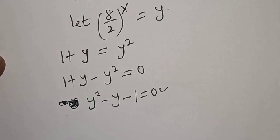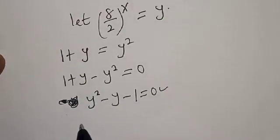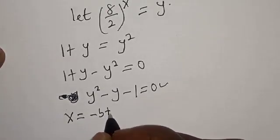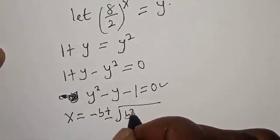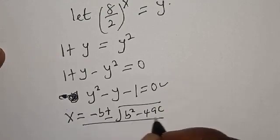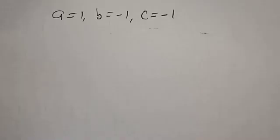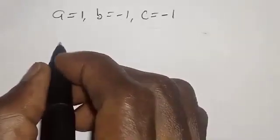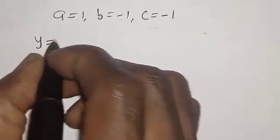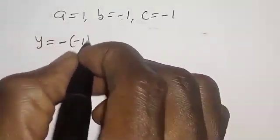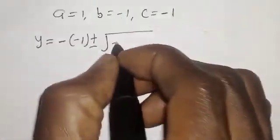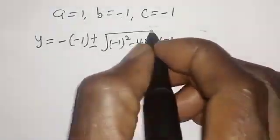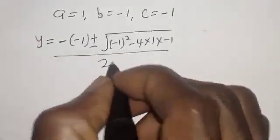This is a quadratic equation. We solve using the quadratic formula: y is equal to minus b plus or minus square root of b squared minus 4ac, over 2a. Here a equals 1, b equals minus 1, and c equals minus 1. So y equals minus of minus 1, plus or minus square root of minus 1 squared minus 4 times 1 times minus 1, over 2 times 1.